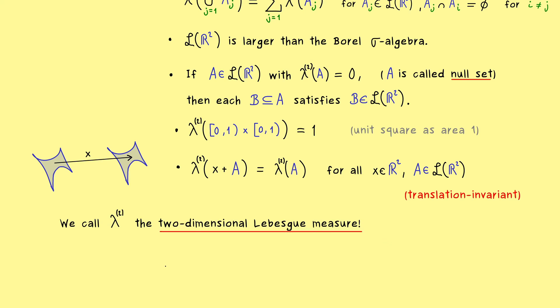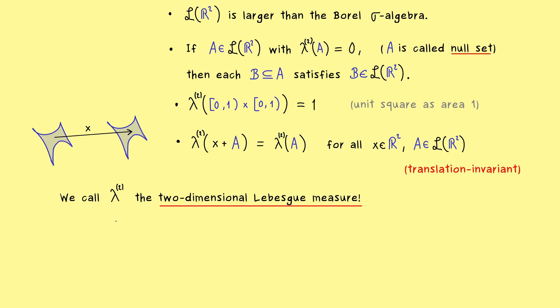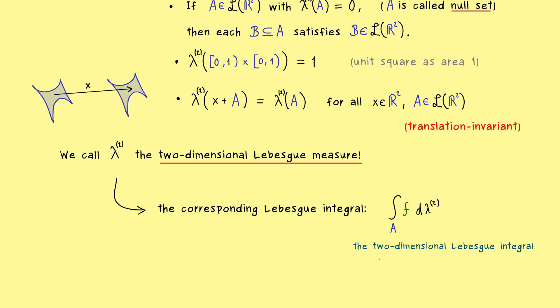And now with respect to this measure, we can now also define integrals. This works very nicely, because we can define Lebesgue integrals for any measure. Hence, we don't do anything new. We just put in the two-dimensional Lebesgue measure for the Lebesgue integral. And therefore, we simply call this integral the two-dimensional Lebesgue integral.